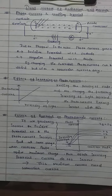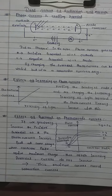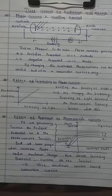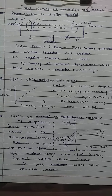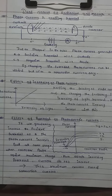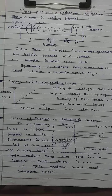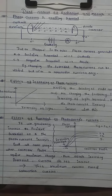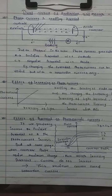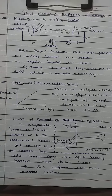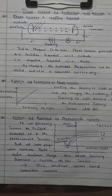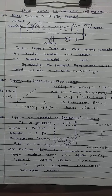Intensity का मतलब है number of radiation जो cathode पे लग रही है उसको increase करना। जब हम intensity को increase करते हैं यानि number of radiation को increase करते हैं, तब photon की energy नहीं बढ़ती। If we increase the intensity, that doesn't mean we are increasing the energy — energy और intensity को कभी relate नहीं करना। जैसे radiation बढ़ेगी, electron पे ज़्यादा strike होगी और उतने ज़्यादा electrons emit होंगे और anode की तरफ travel करेंगे।